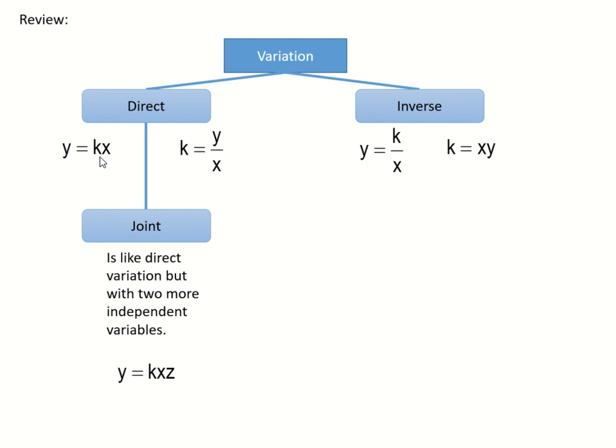And for inverse, we have y is equal to k over x, or is equivalent to the statement y varies inversely as x, or y is inversely proportional to x. Now to get the constant of k, we have y over x for direct, and for inverse, we have k is equal to x times y. Notice the operations used in the equation for direct, we have multiplication, for inverse, we have here division.